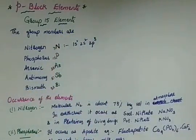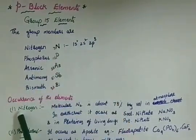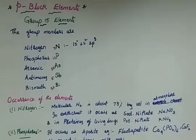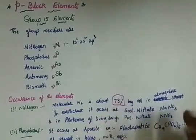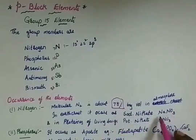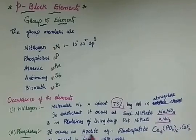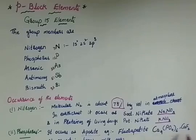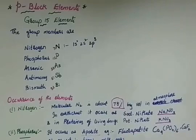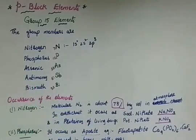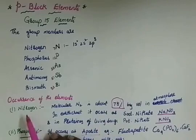Now we will go to the occurrence of these elements. Nitrogen: molecular nitrogen is present in the atmosphere at about 78%, and it is also present in the earth's crust as sodium nitrate and potassium nitrate. Phosphorus occurs as the apatite family — for example, fluorapatite — and is also present in bones, milk, eggs, and other living things. The last three — arsenic, antimony, and bismuth — are found mainly as sulfide minerals.